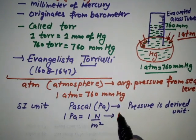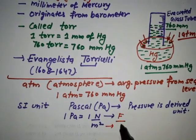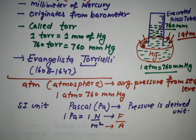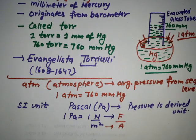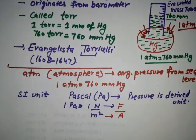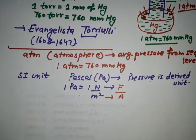Meter squared comes from area, from the formula F/A. Newton is the unit of force, and meter squared is the unit of area. There are some other pressure units also.